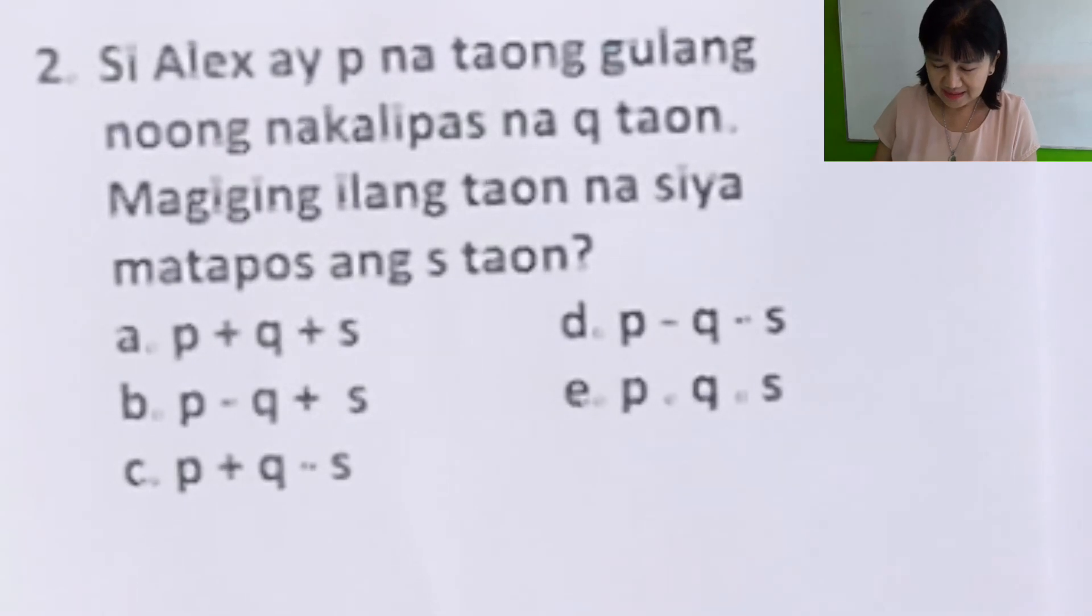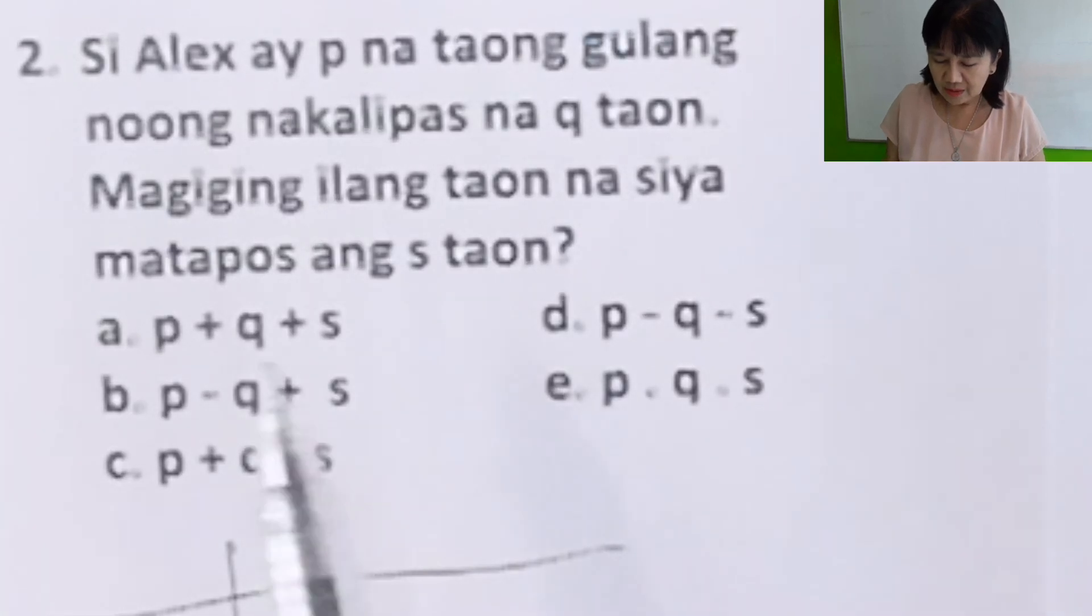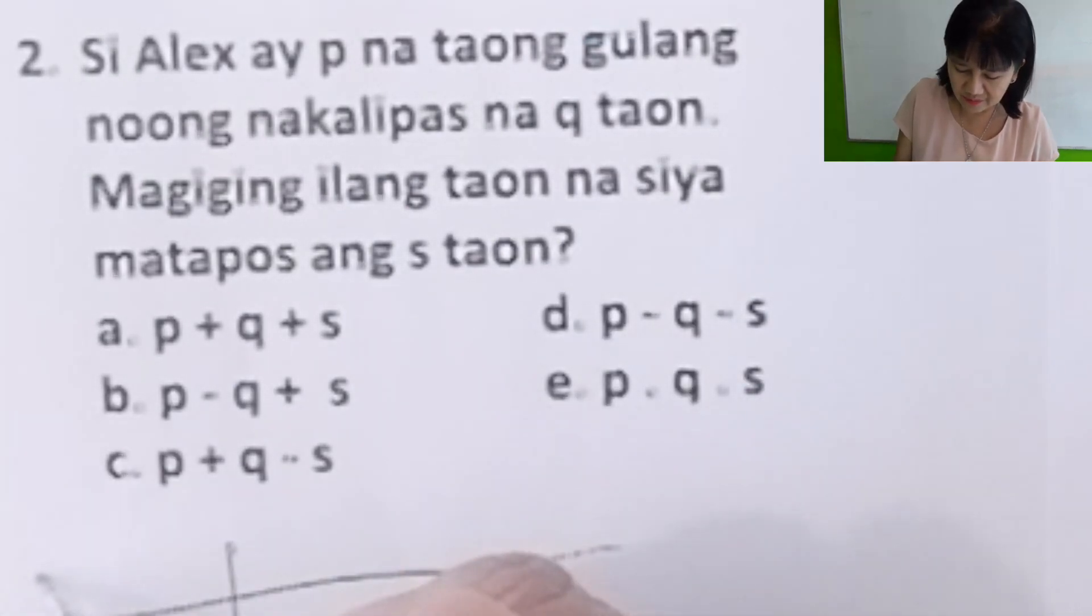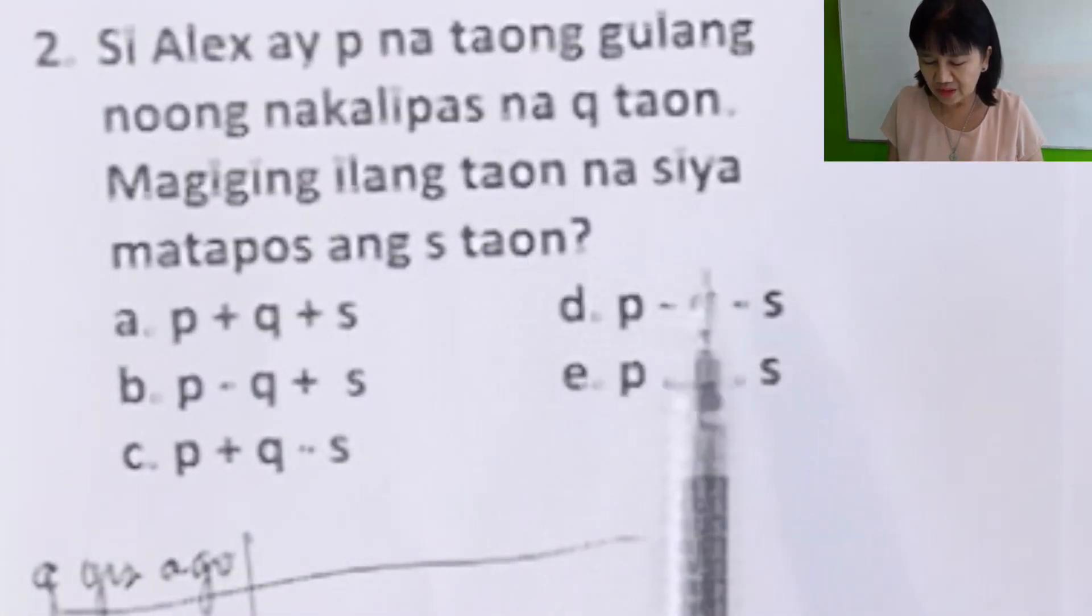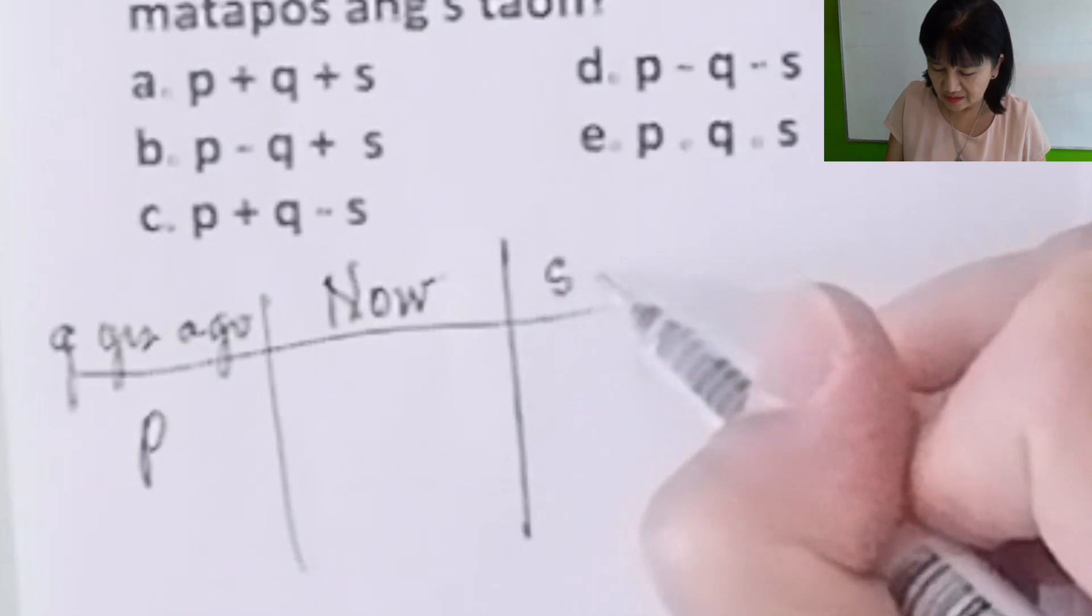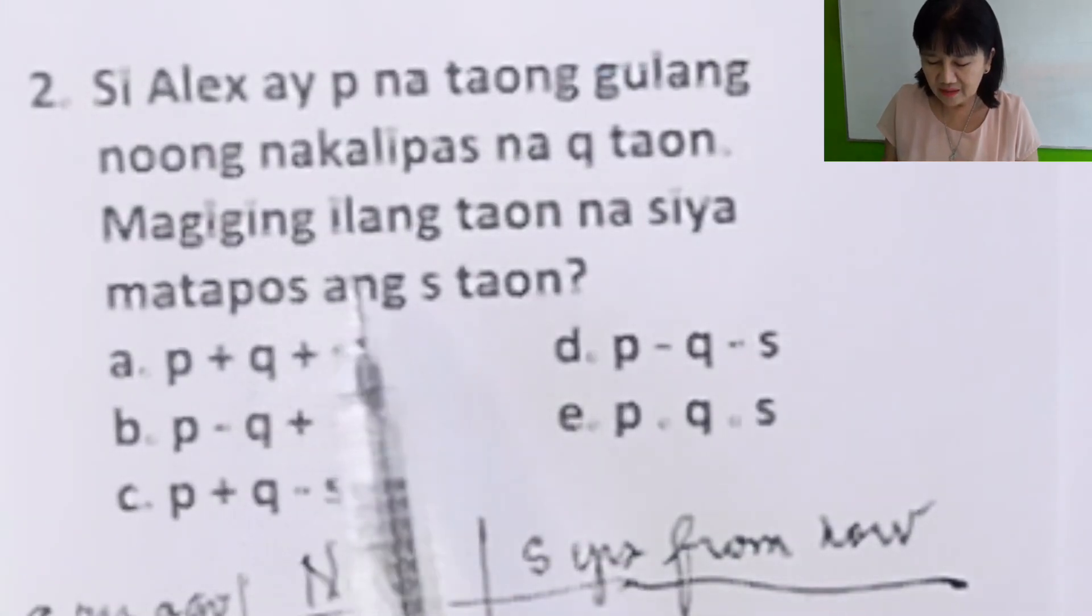Problem number two: Si Alex ay P na taong gulang noong nakalipas na Q taon. In English: Alex is P years old Q years ago. Magiging ilang taon na siya matapos ang S na taon? Let's get his age now and his age S years from now. How old will he be S years from now?